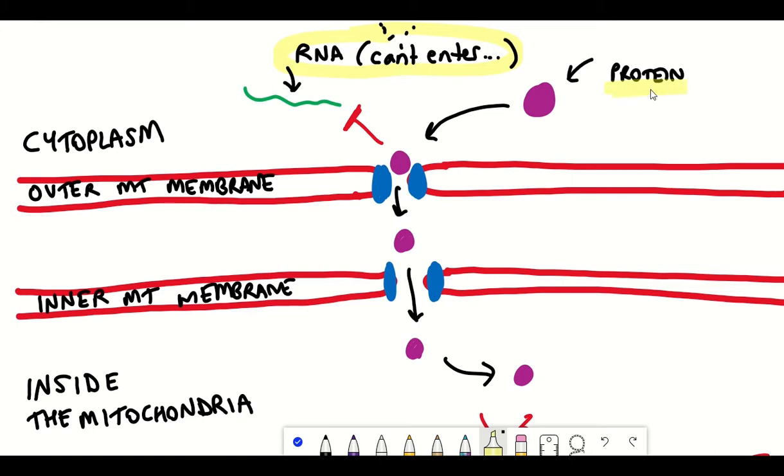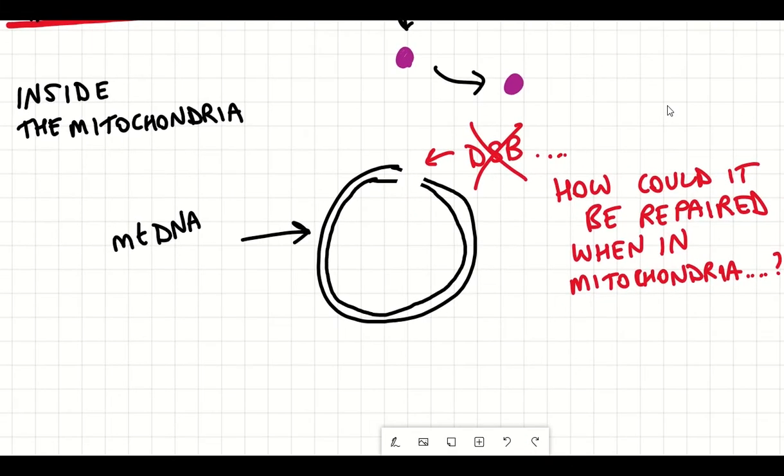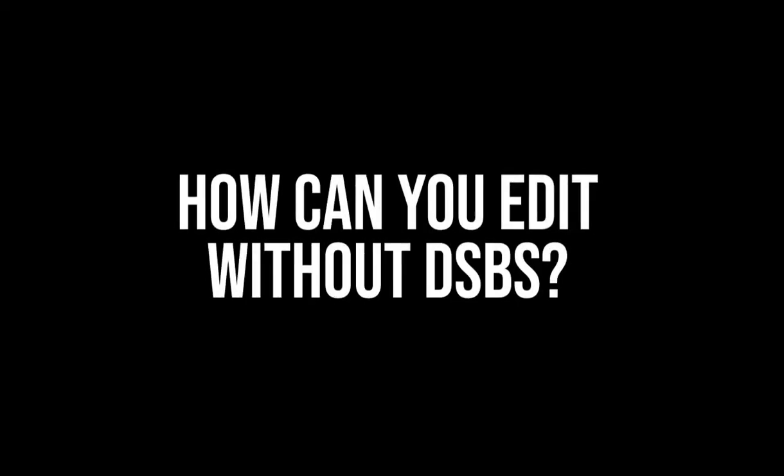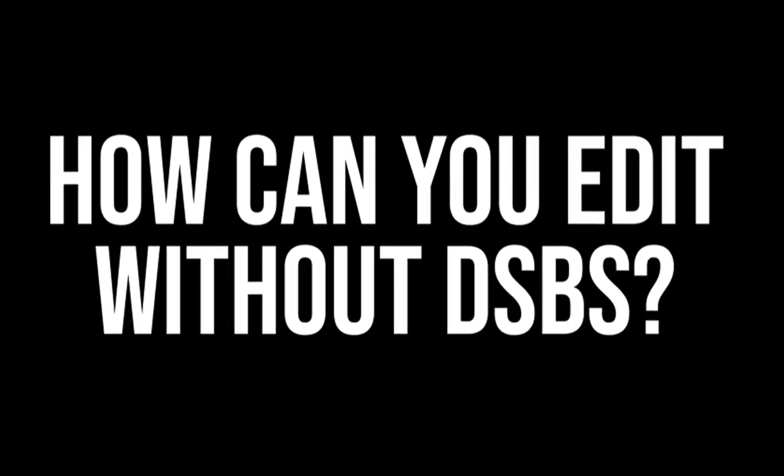So this circumvents the issue of not being able to get RNA into the mitochondria because the protein-DNA interaction can be used instead. However, these techniques also induce double-stranded breaks for their gene editing, which, as I've already mentioned, mitochondria don't really have any mechanisms to repair. So the question is then, how can you actually edit without double-stranded breaks?